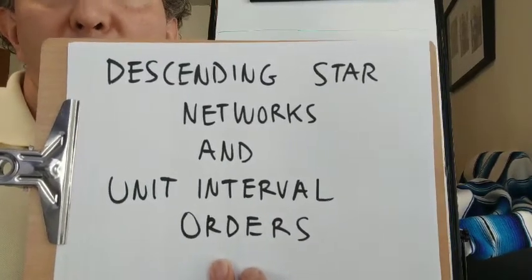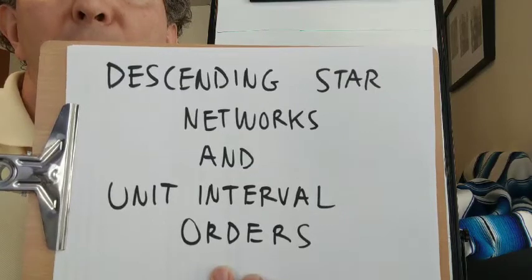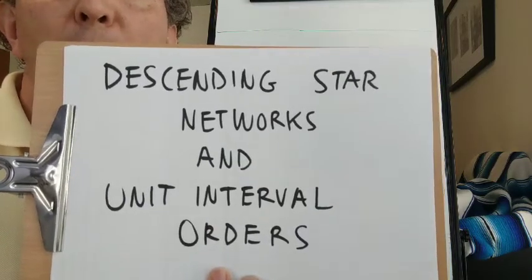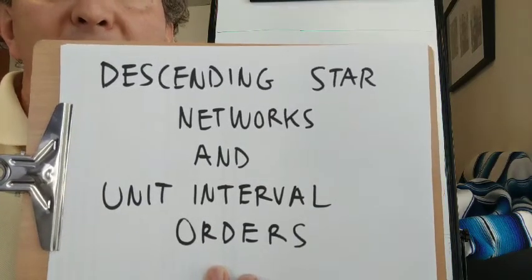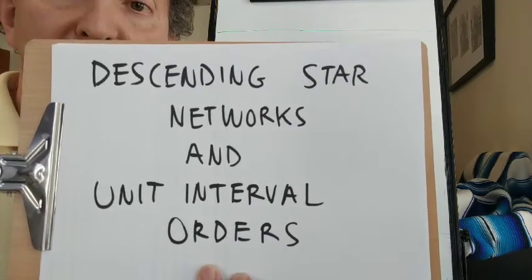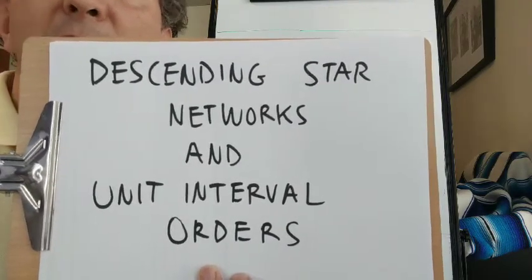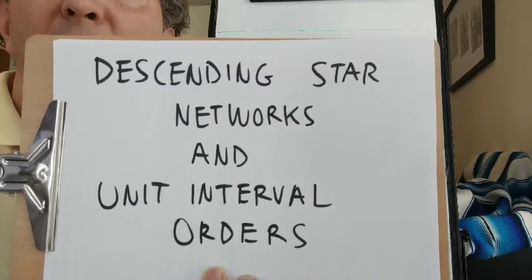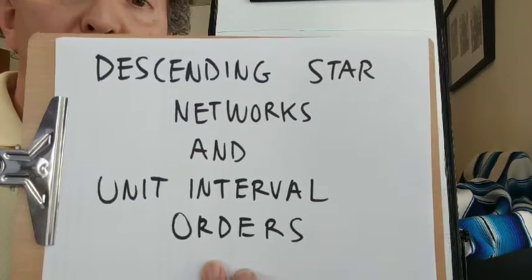Certain postsets have been creeping into our computations in the form of path postsets, where we define one path in a star network to be less than another path if it lies entirely below the other path with no intersection. It turns out that if our star network is a descending star network, then that postset is in unit interval order.